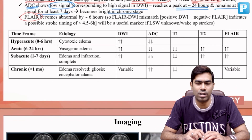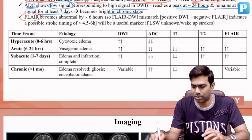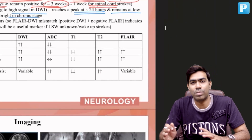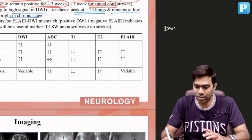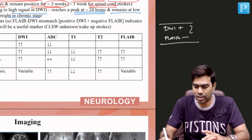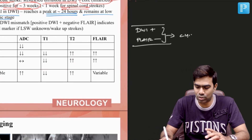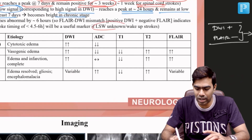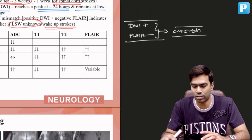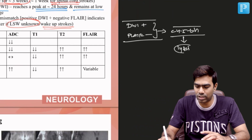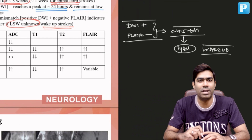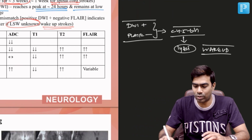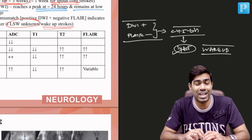FLAIR is also equally important, and there is renewed interest in FLAIR especially after the WAKE-UP trial, because FLAIR starts to become abnormal by around 6 hours. So if you have an abnormal DWI but a normal FLAIR, this is called DWI-FLAIR mismatch, and it clearly indicates the stroke is less than 4.5 to 6 hours old. This is especially useful for wake-up strokes, making them potential candidates for thrombolysis — as proven by the WAKE-UP trial — particularly if endovascular therapy is delayed.